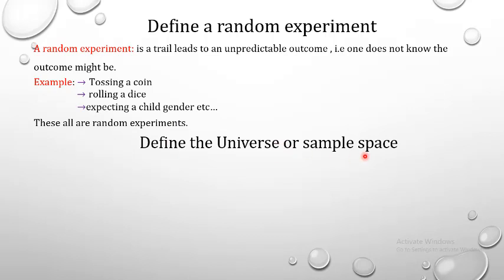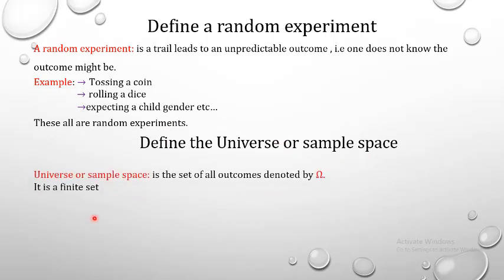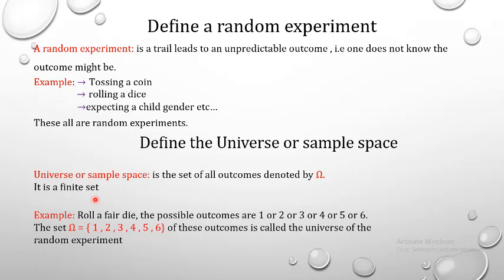Define the universe or sample space: it is the set of all outcomes, denoted by omega. It is a finite set. For example, in rolling a die, the possible outcomes are one through six, so the set omega contains the outcomes from one to six. It is called the universe of the random experiment.